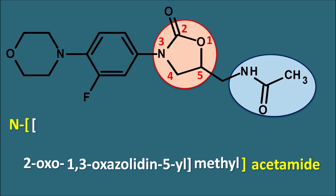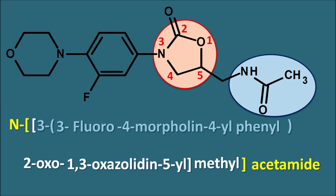The 2-oxo-1,3-oxazolidin-5-yl ring is attached at the fifth position to the N-methyl acetamide. At the third position there is a phenyl group, which further carries a fluoro substituent — 3-fluoro — and at the fourth position, it has a morpholine ring attached through the nitrogen of morpholine, so 4-morpholin-4-yl phenyl. This gives us the complete IUPAC name of Linezolid.